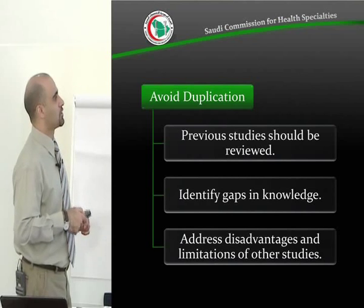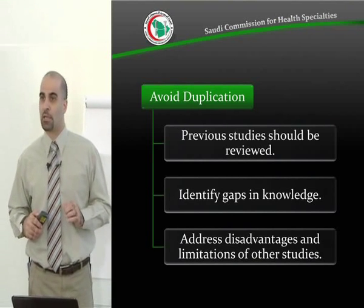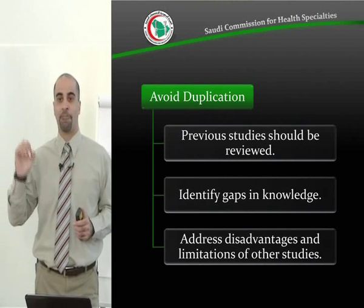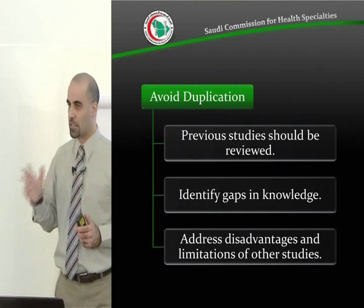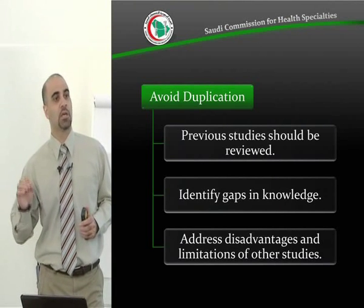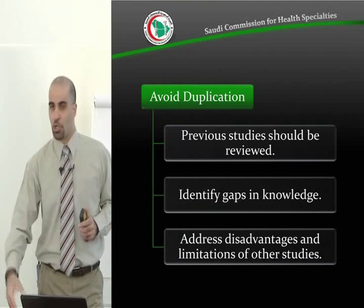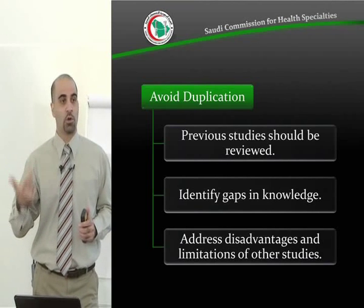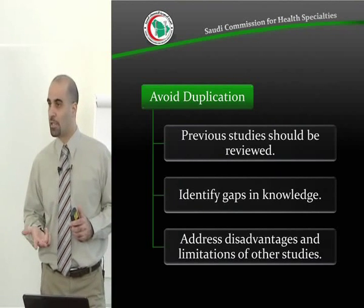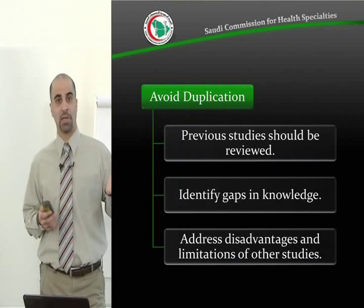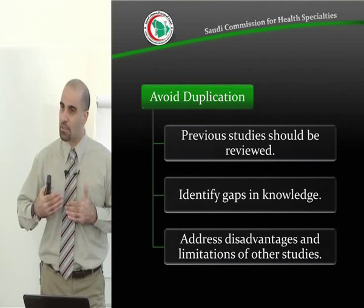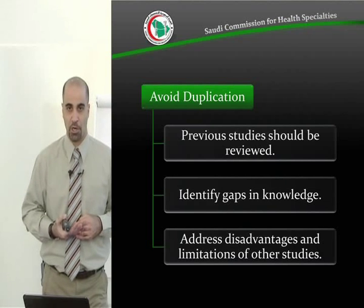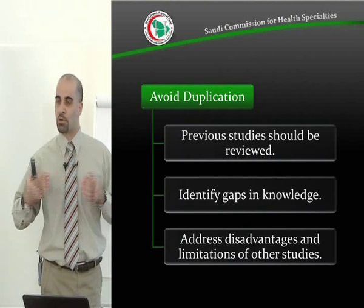Address disadvantages and limitations of other studies. When you do a literature review and try to avoid duplication, you try to avoid the limitations carried out in other studies. For example, assume the prevalence of hypertension was also carried out in Riyadh — you pick up the article, but find it is a very weak study: the sample size was very small, or the way they assessed hypertension was not reliable. So it's not a duplication anymore. On the contrary, you are doing something that builds on the previous experience of people, doing a study that avoids the problems or limitations of the previous studies.